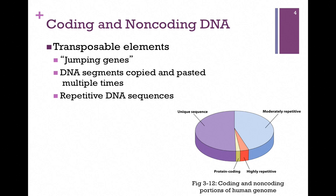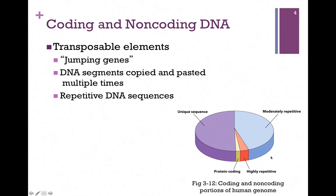If we look at the human genome in this figure from your book, we find the presence of repetitive sequences. In our pie chart, the small yellow wedge represents the portion of the DNA that codes for protein. There's also a larger proportion that are highly repetitive DNA sequences, a good proportion that are moderately repetitive, and some that have unique sequences.